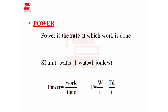Power is the rate at which work is done. Power equals work divided by time. W by T is equal to F times D by T. One watt is one joule per second, so the SI unit of power is one joule per second.